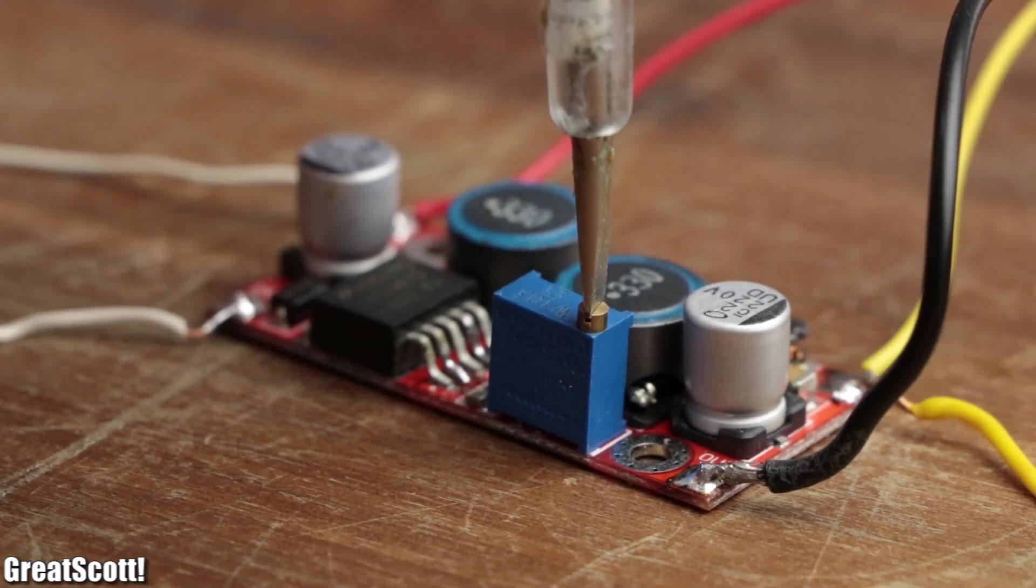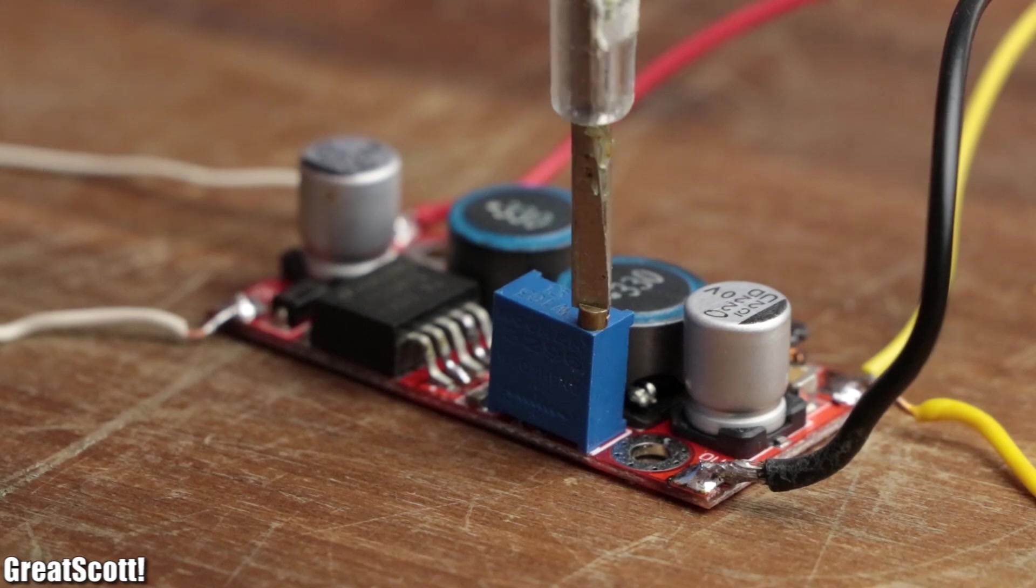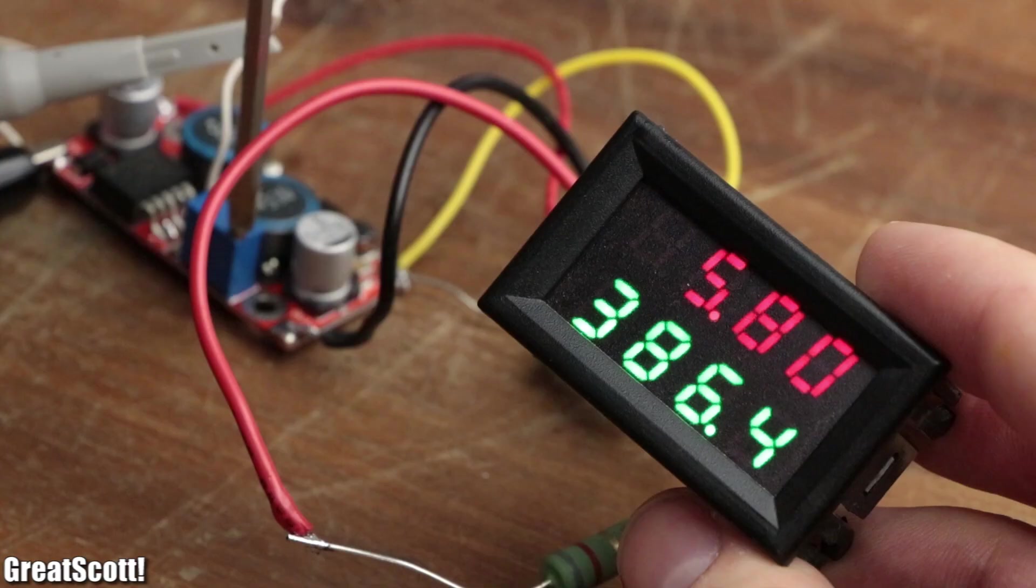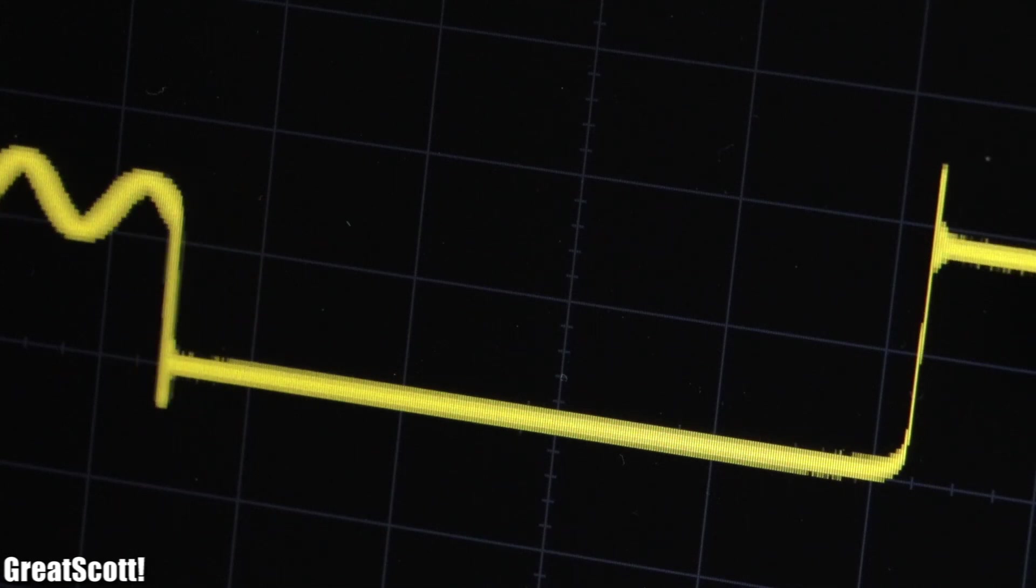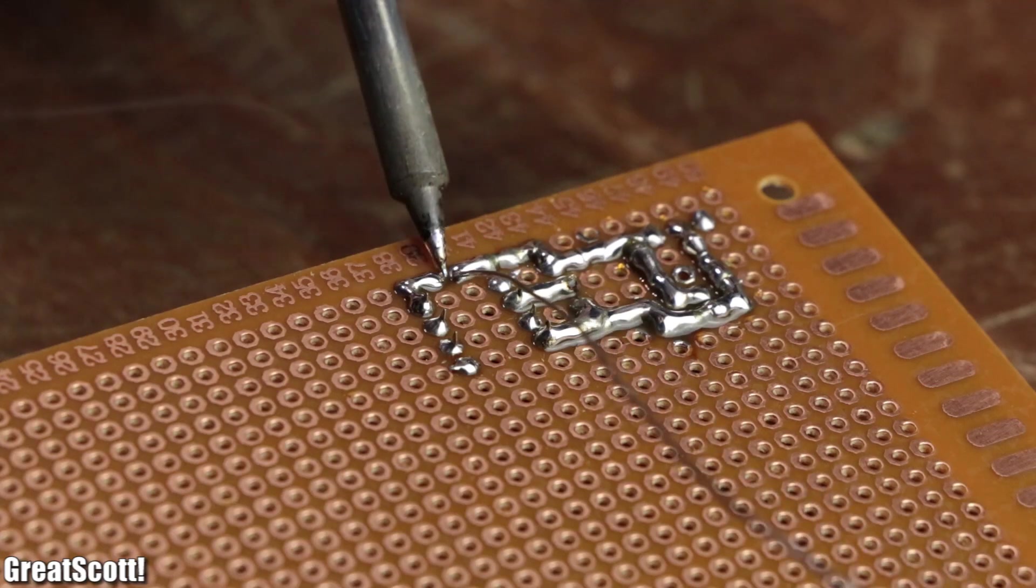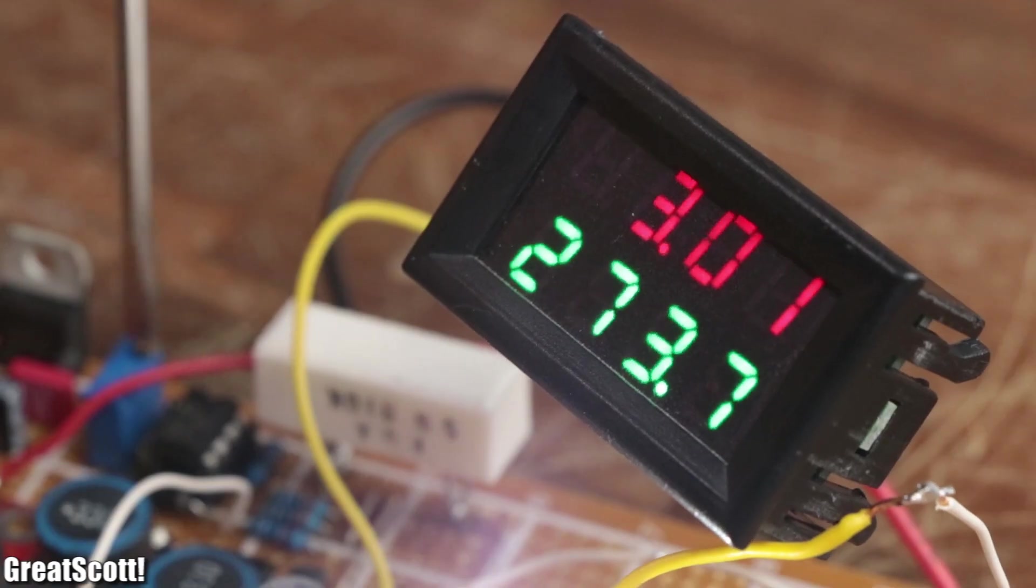Now the buck boost converter can only adjust its output voltage, not the current. So in this episode, we will have a closer look at the circuit of such a board and see whether we can add our own current limit function to it. Let's get started.